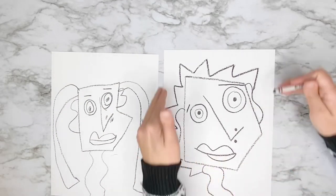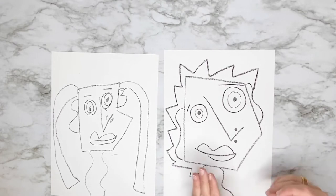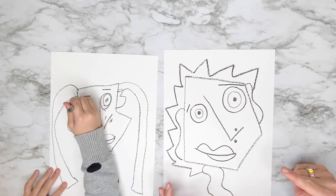So now in the background, we want to pick a line or a line design or a pattern or a shape. And we're going to fill our background with that pattern.